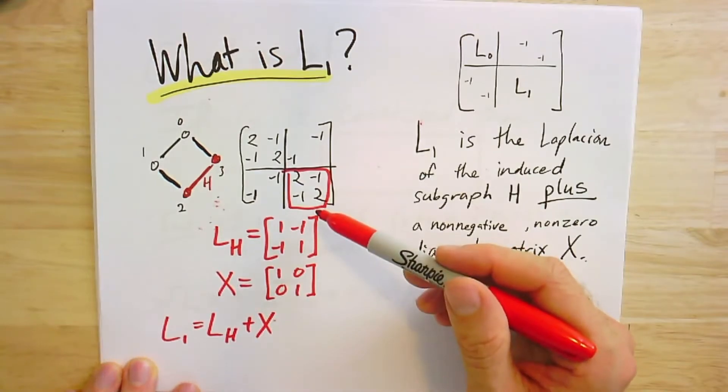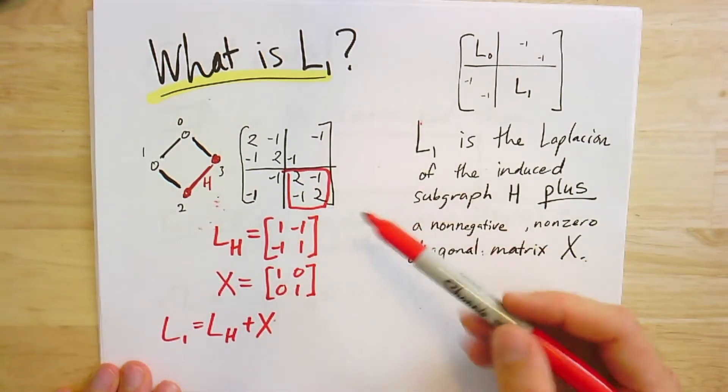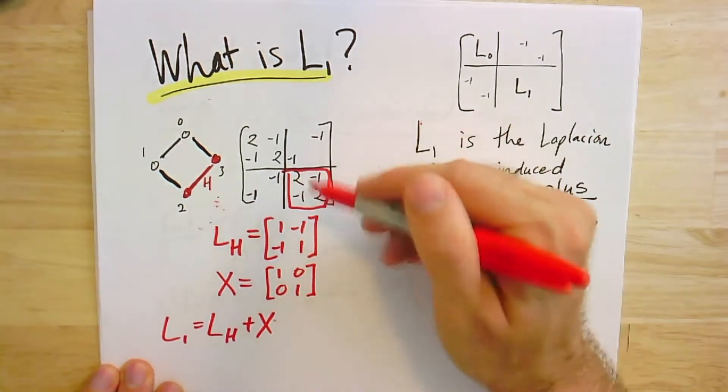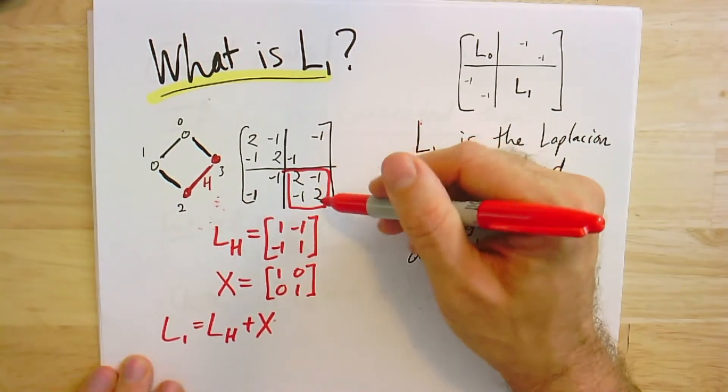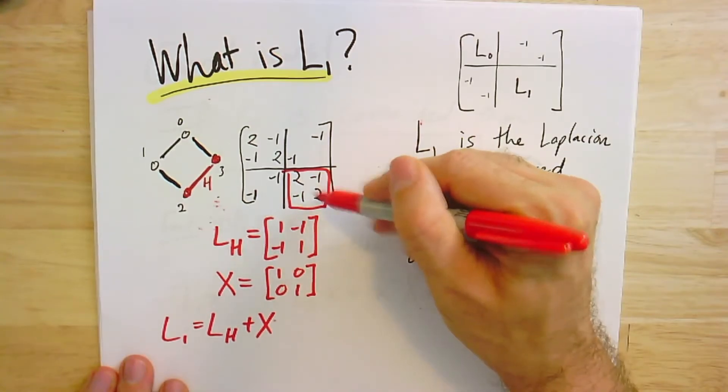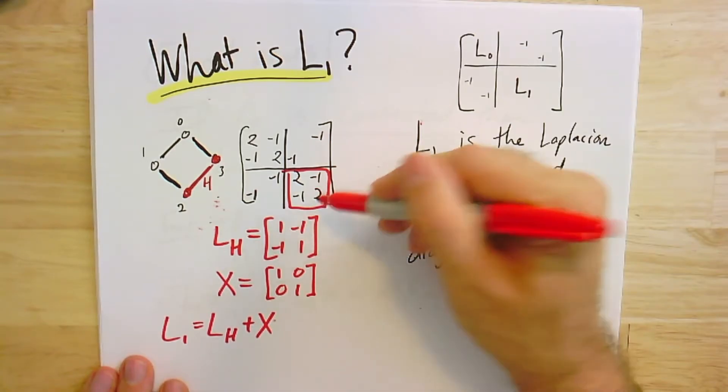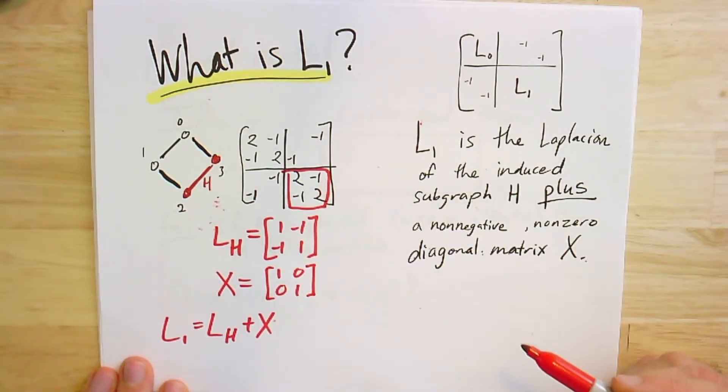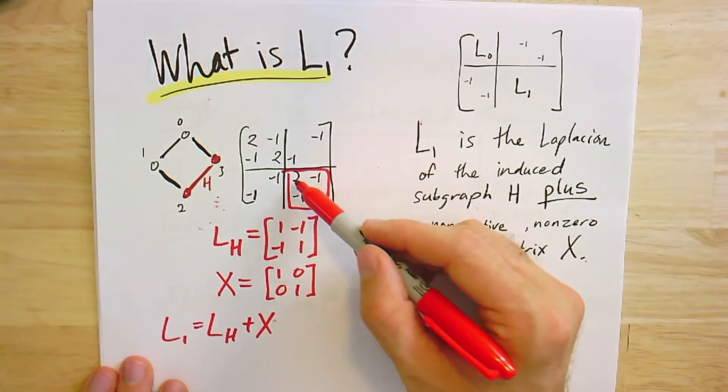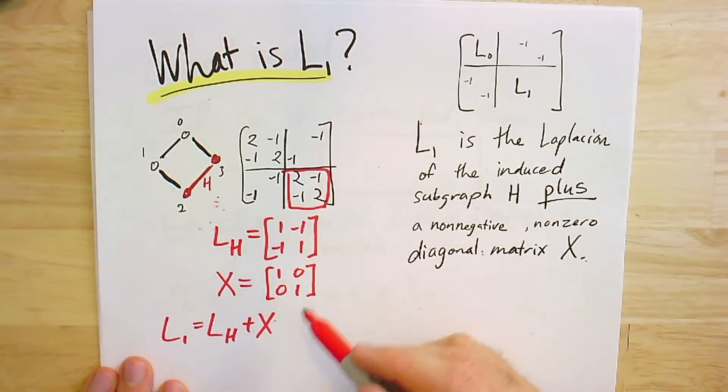In other words, this L1 is LH plus x. It turns out that this will always be the structure of a sub-Laplacian system, and maybe it's not too hard to see why. Clearly the negative ones off the diagonal still correspond to edges, and the diagonals are the degrees in G, which must be greater than or equal to the degrees in H, because H is just the induced subgraph on this subset of vertices that I kept. And so the difference between the degree in G and the degree in H is some positive number, or it could be zero for some, and that's what shows up on this diagonal X.